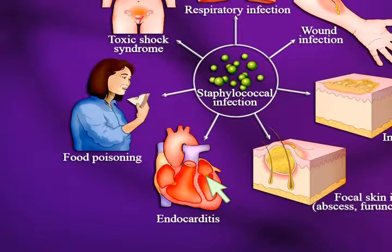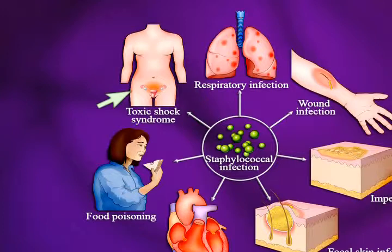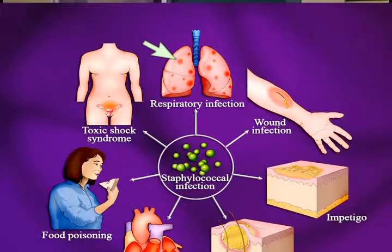Staph can also get onto the valves of the heart and cause endocarditis, which is quite serious — it comes from staph getting into the blood, which can happen many ways. Lots of bacteria can get into the blood from patients who have gum disease; simple chewing can create little breaks in capillaries. That's why patients with heart valve disease or artificial valves get antibiotics before they go to the dentist. You can also get food poisoning. Toxic shock syndrome was common when there were tampons designed to be left in for long periods, allowing growth and release of endotoxin from the staph.